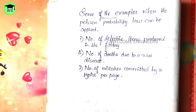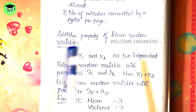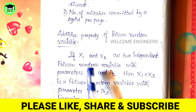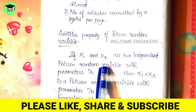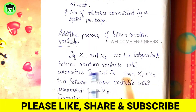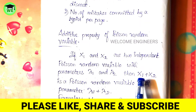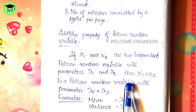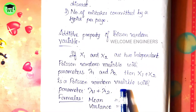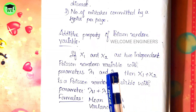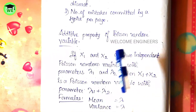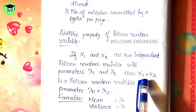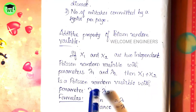In Poisson distribution, one important property is the additive property of Poisson random variables. If X1 and X2 are two independent Poisson random variables with parameters lambda1 and lambda2 respectively, then X1 + X2 is also a Poisson random variable with parameter lambda1 + lambda2. This is the additive property of Poisson random variables.